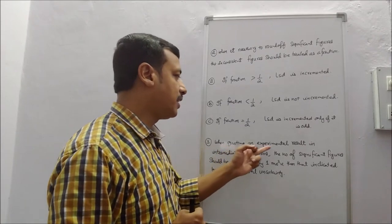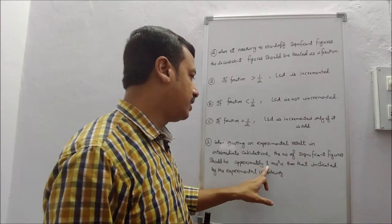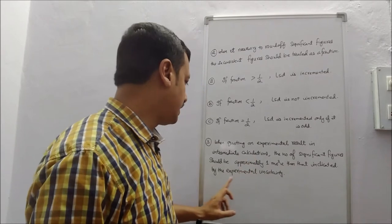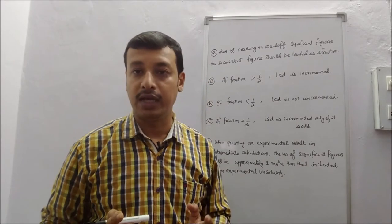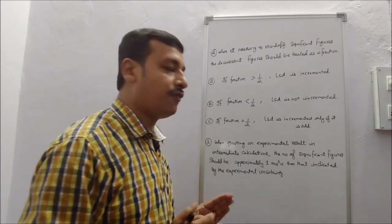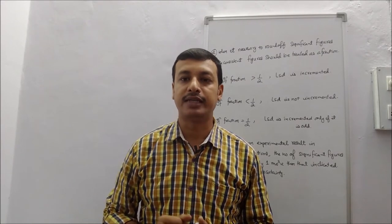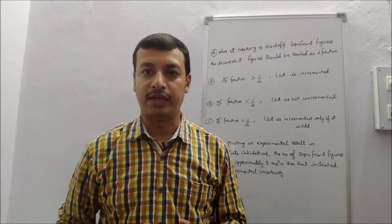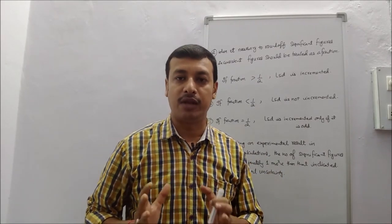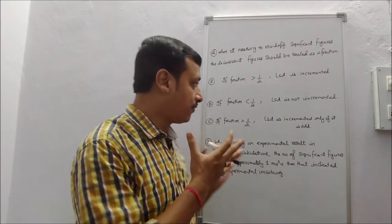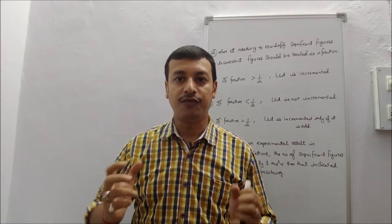Third: when quoting an experimental result in intermediate calculations, the number of significant figures should be approximately one more than that indicated by the experimental uncertainty. The value in significant figures will be one more than what the experimental uncertainty shows. Further details with examples will make this clearer — how we find significant figures for experimental data.